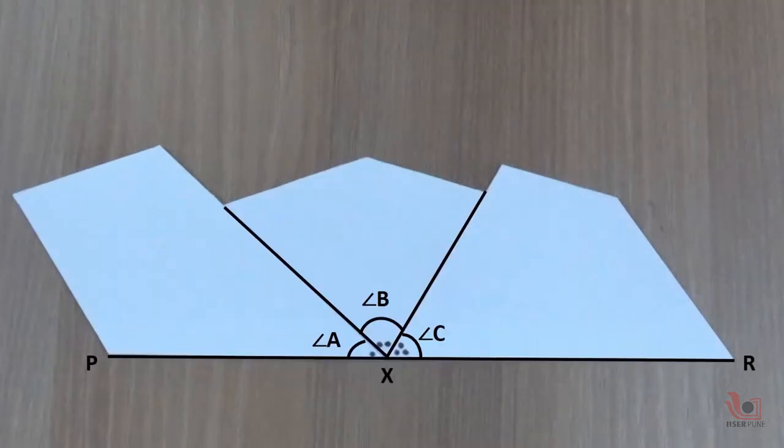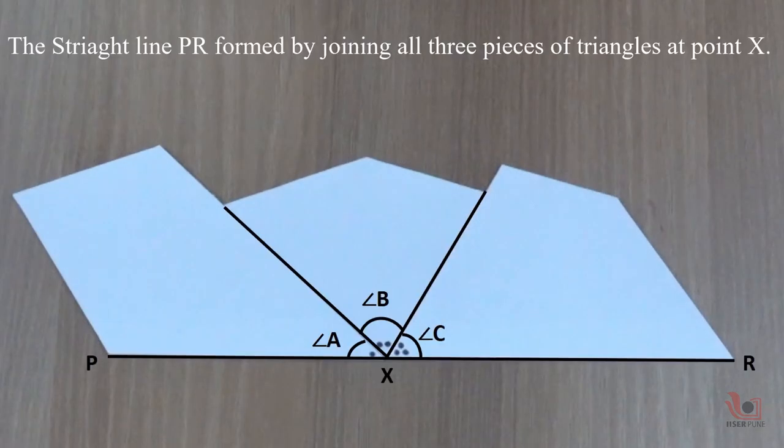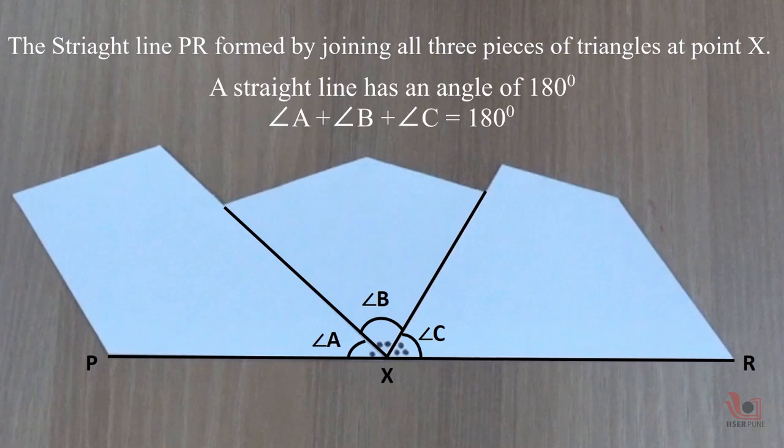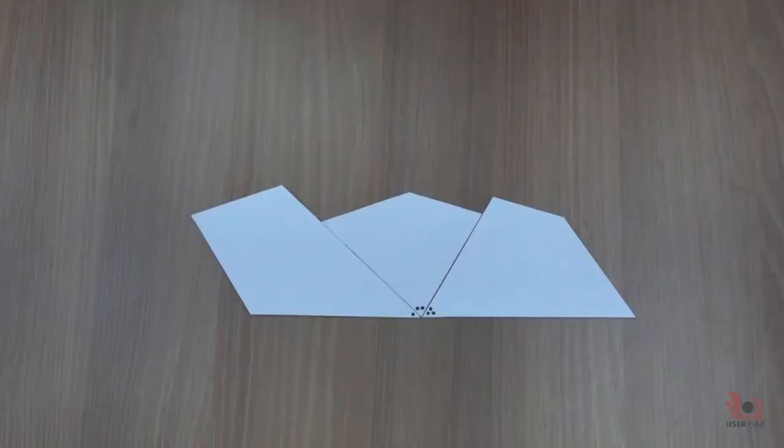Here we showed that all the three angles align in a straight line PR. The addition of the internal angles in the triangles is always 180 degrees.